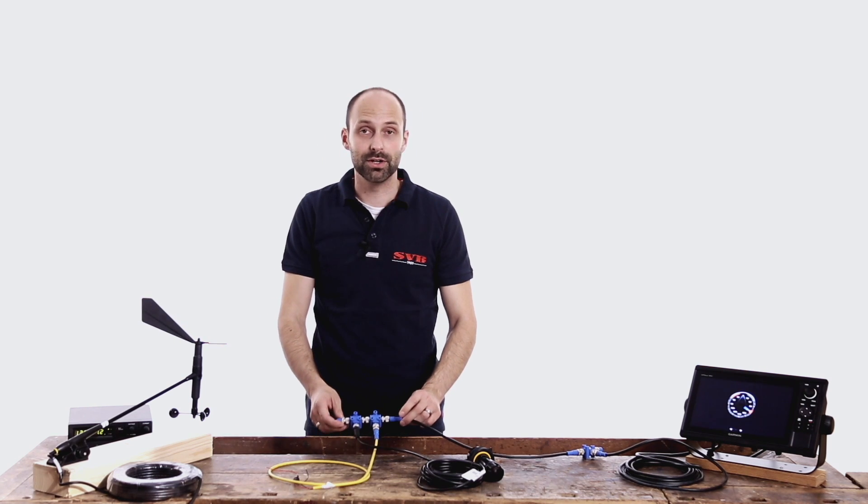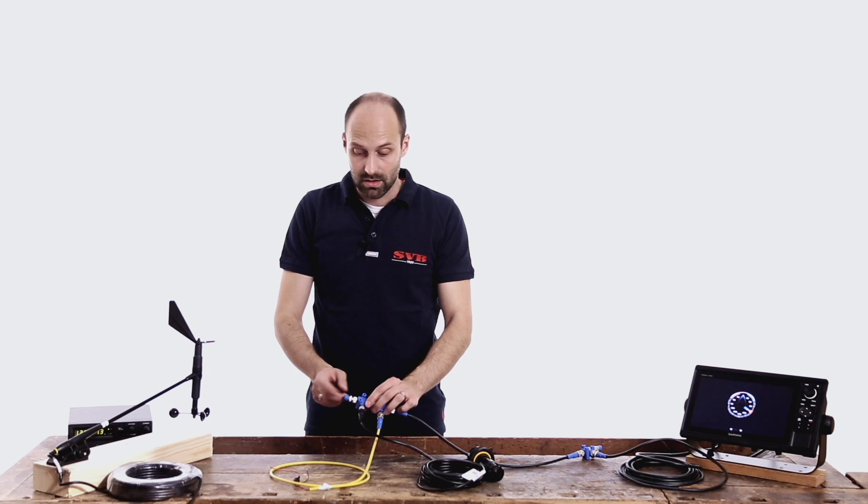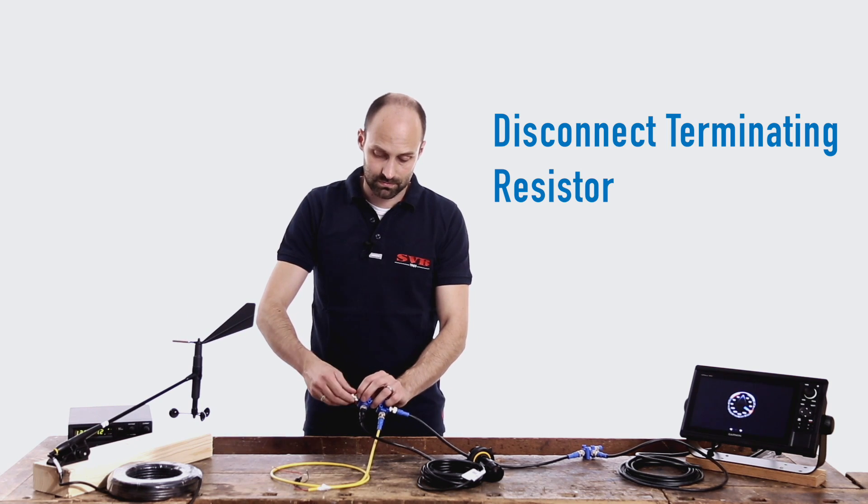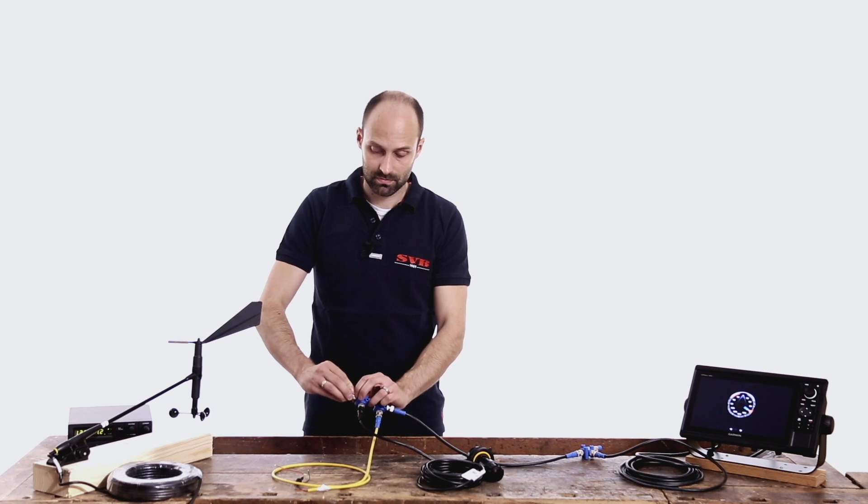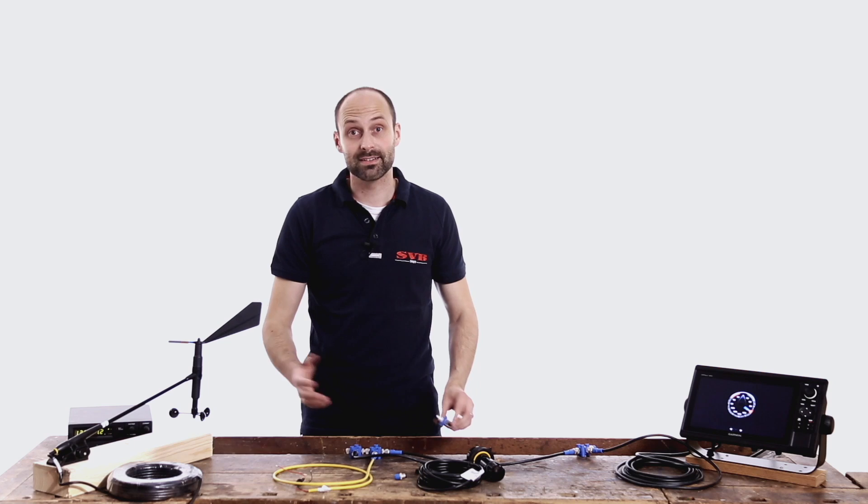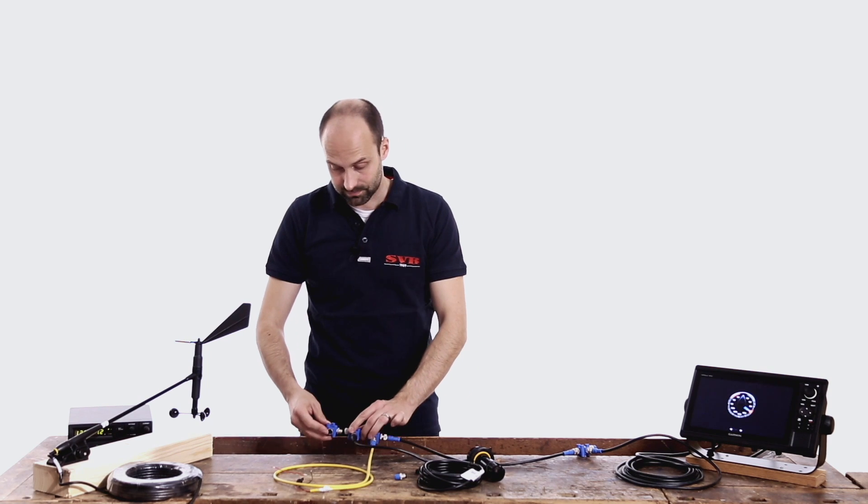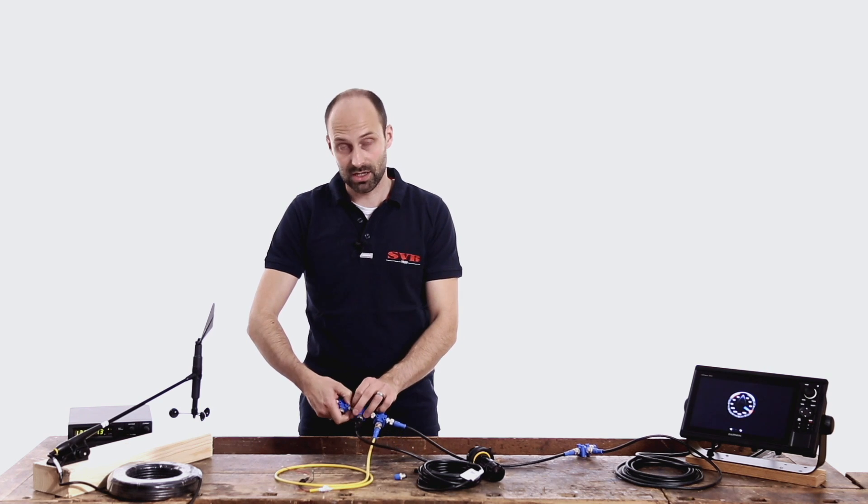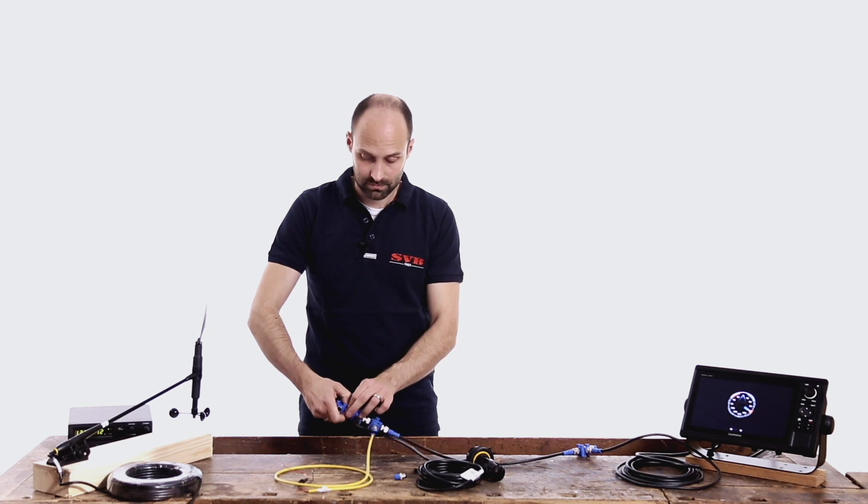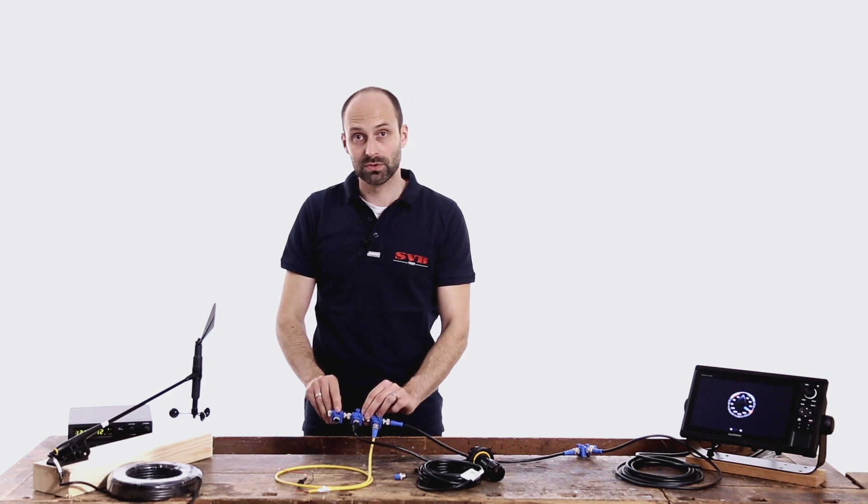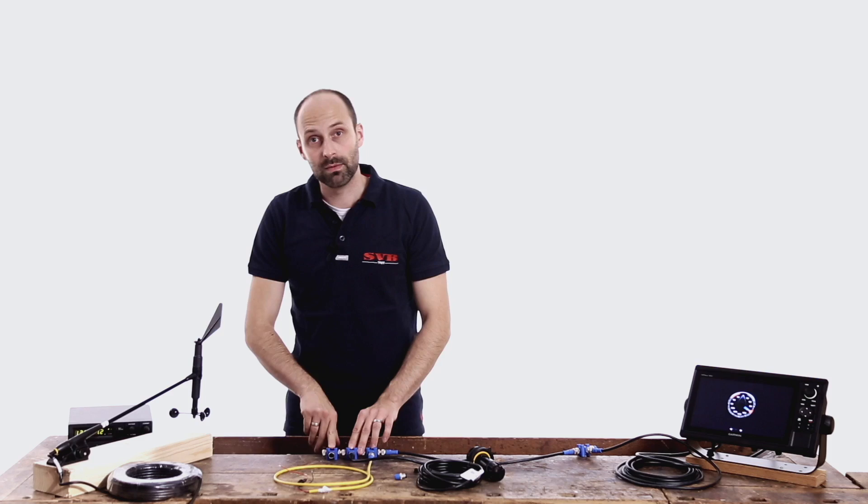We can now begin to integrate the sensor into the network. Disconnect the terminating resistor from the T-piece and simply expand the network using another T-piece. Very quick and simple thanks to the plug and play system. We now have a further free port in our backbone to which we can attach the wind sensor's cable.